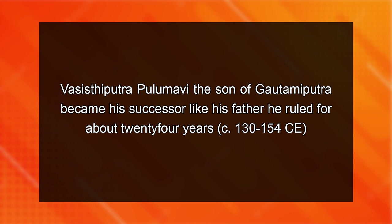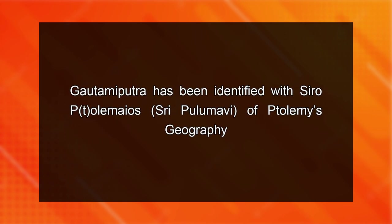Vashishtiputra Pulumavi, the son of Gautamiputra Satakarni, became his successor. Like his father, he ruled for about 24 years, from 130 to 154 CE. He has been identified with Shripulomavi of Ptolemy's geography. Paithan continued to remain his political centre. Four inscriptions — of years 2, 6, 19 and 22 of his era — have been discovered in Nasik, which means he retained control over this area and also over Karle near Pune. Apart from that, the Amravati region was also under his control, as his inscription from Amravati in eastern Deccan suggests. The ships shown on his coins suggest his control over sea trade.